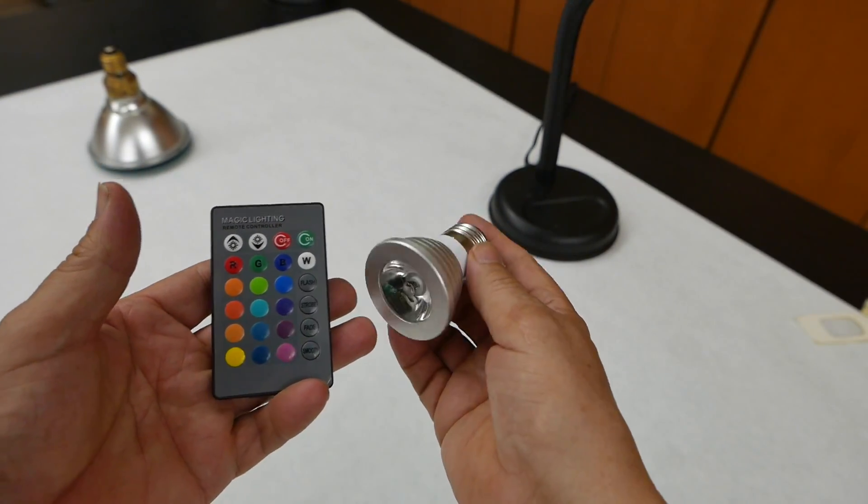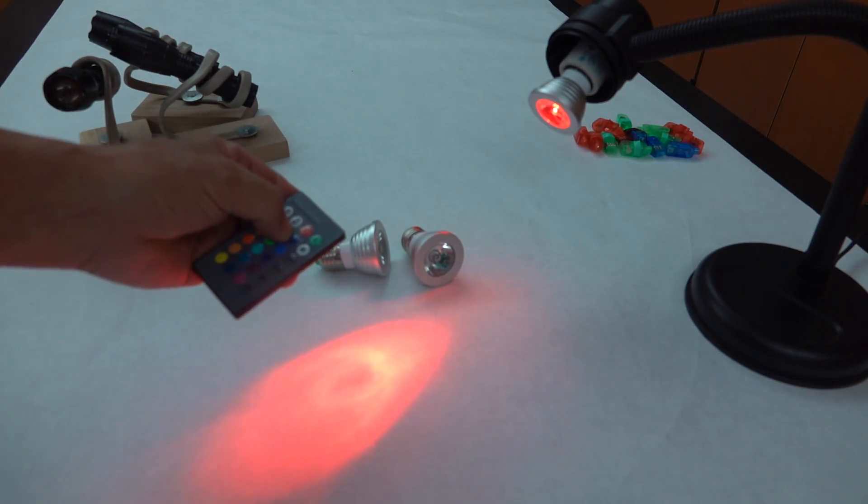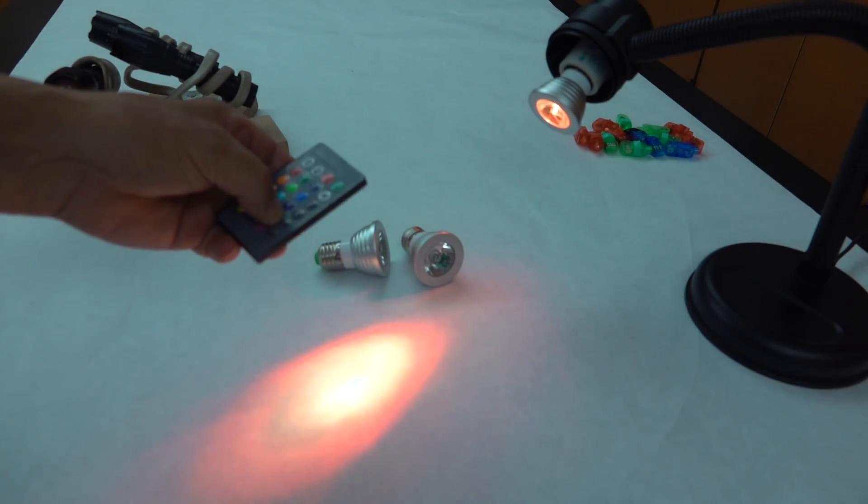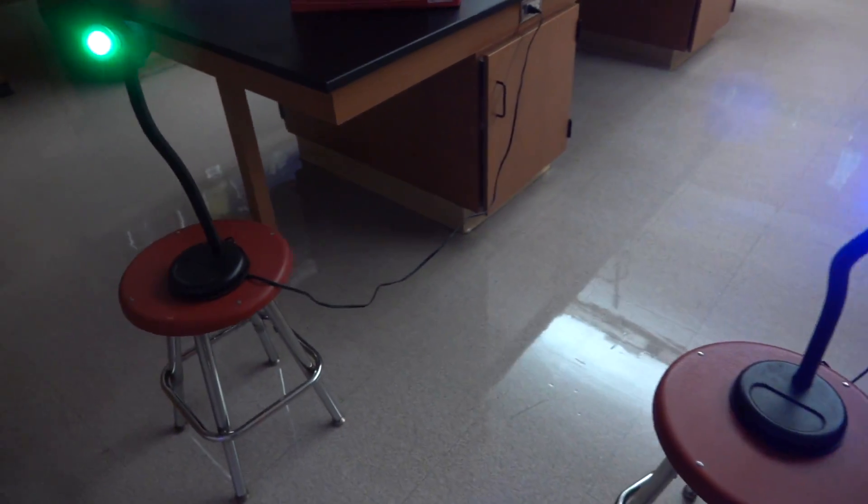The screw-in bulbs have a remote that goes along with it which is going to allow me to get several different colors out of each bulb. However, the quality isn't quite as good as the flashlights. Now I'll set these up the same way and then use the remote to change the color of the individual bulbs.